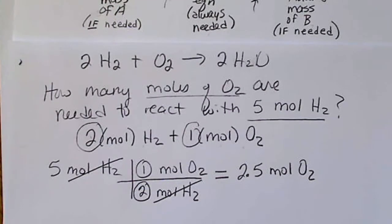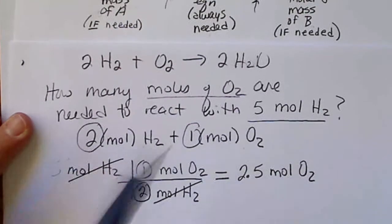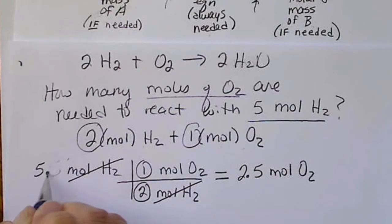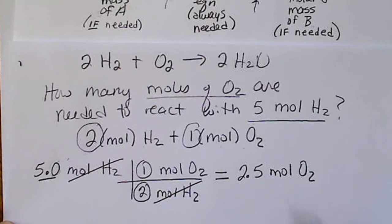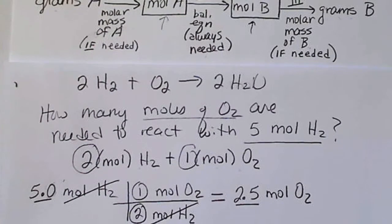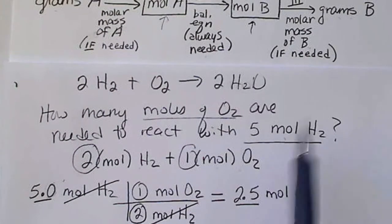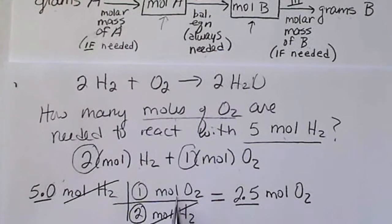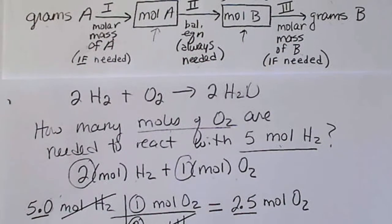Now as far as significant figures goes, I probably should have started us out with two significant figures there so that we could end up with two significant figures there. So when we're given moles in the question and we're asked for moles, it's always going to be a one-step calculation only.